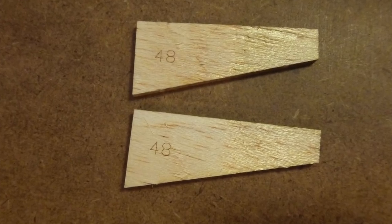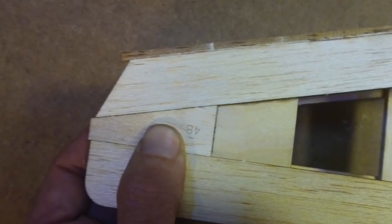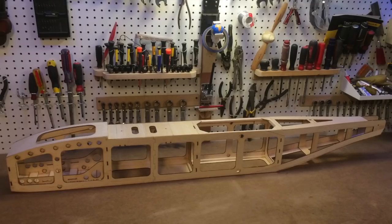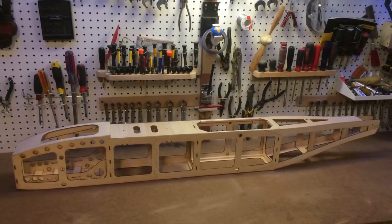Locate parts number 48, and glue them to the outside of the rear fuselage sides. The fuselage main structure is now complete.